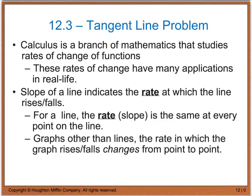So far we've talked about the slope of a line. The slope of a line actually indicates a rate at which the line is either rising or falling, depending on whether we have a positive or negative slope. For a line, the rate is the same at every point on the line, because it has a constant continuous slope.